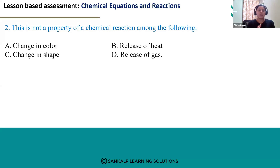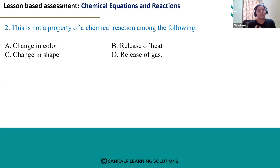We say a chemical reaction has taken place when we observe any of the four properties. The four properties are: change in color, change in state, change in temperature, and evolution of gas.